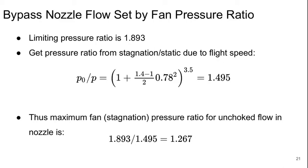And so if we just take the ratio of these two quantities, it's going to give us the maximum additional total pressure rise that we can have from the fan to just choke the nozzle, and that's going to be 1.267.